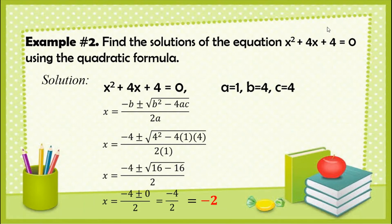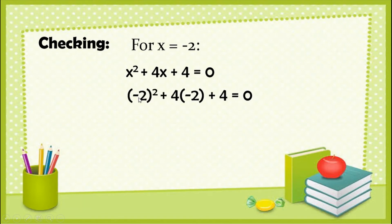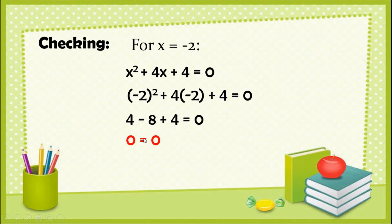Therefore, the root of x squared plus 4x plus 4 equals 0 is negative 2. Let's check by substituting into the original equation: negative 2 squared plus 4 times negative 2 plus 4 equals 0. That gives 4 minus 8 plus 4, which equals 0. Correct — negative 2 is verified as the solution.